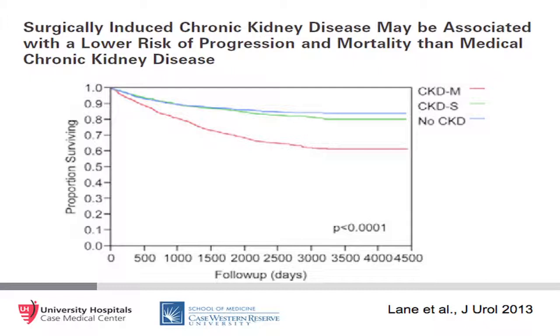Not all chronic kidney disease may be created equal. Lane et al. recently published in the Journal of Urology that surgically induced chronic kidney disease may not be as harmful as medically induced CKD. Patients with surgical CKD had similar survival to patients with no CKD, whereas those with medical CKD had worse overall survival as well as worse deterioration in renal function postoperatively.